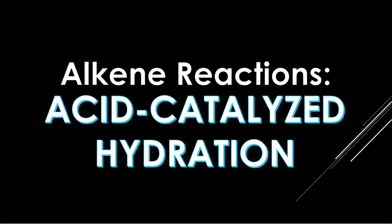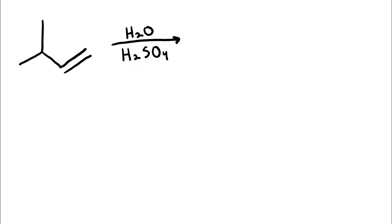Hey guys, it's Lexi, and in this video on alkene reactions, we're going to be talking about acid catalyzed hydration. Here we have an acid catalyzed hydration reaction, and the way that we know this is acid catalyzed hydration is because we're reacting a double bond or an alkene with water in some sort of strong acid. In this case, we're using sulfuric acid.